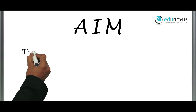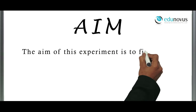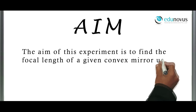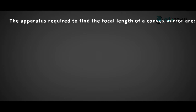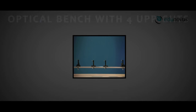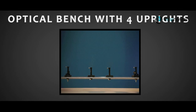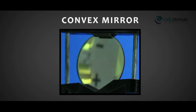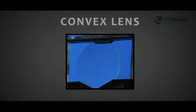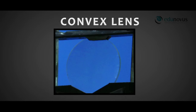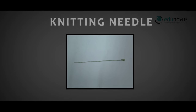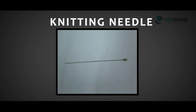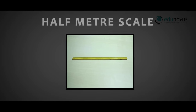The aim of this experiment is to find the focal length of a given convex mirror using a convex lens. The apparatus required includes an optical bench with four uprights, a convex mirror, a convex lens, a knitting needle, and a half-metre scale.